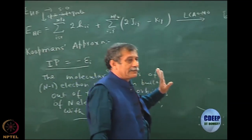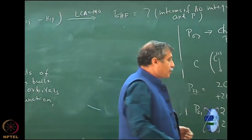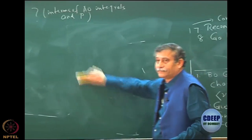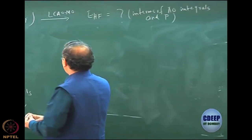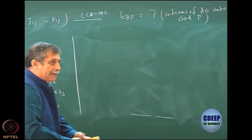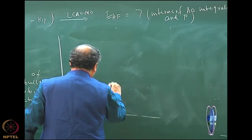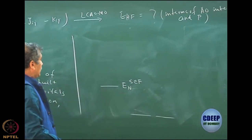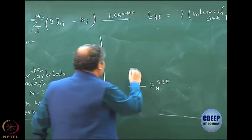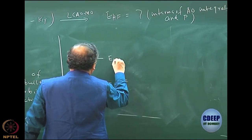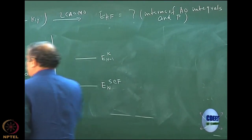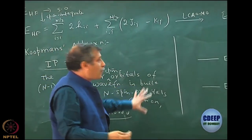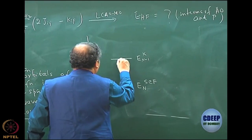This works very well, particularly for ionization. I am trying to give a physical reason why it works well with a small diagram. Let us assume I have a Hartree-Fock N electron energy, which I call E_N SCF - something I have already done. Then I construct what I call E_{N-1} electron energy under Koopmans' approximation. What Koopmans is saying essentially is that this difference is epsilon_i.